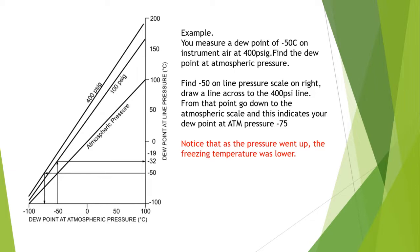The example in the ILM: measuring a dew point of -50°C on instrument air at 400 PSI — find that on the pressure scale and trace to the corresponding atmospheric dew point, approximately -75°C. Comparing at 100 PSI shows a different result, demonstrating that as pressure goes up, the freezing temperature is lower. The conversion chart and detailed math are described very well in the ILM.